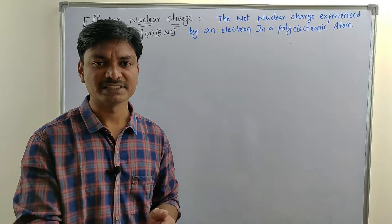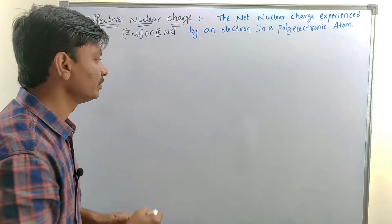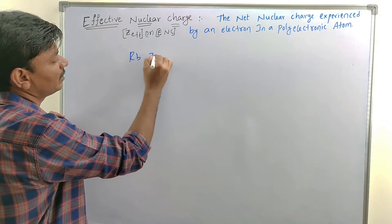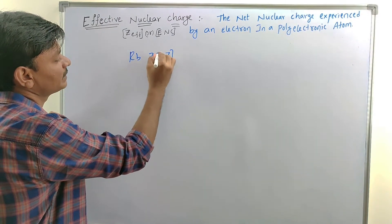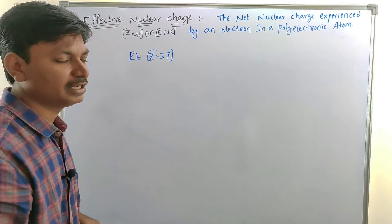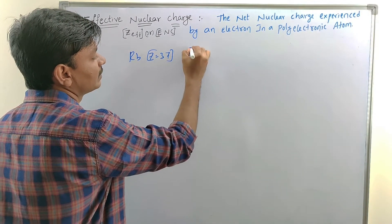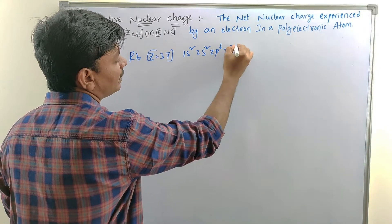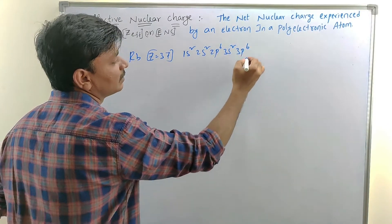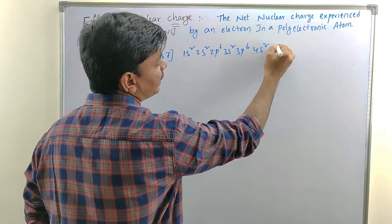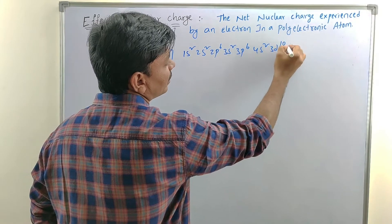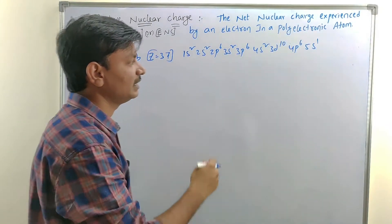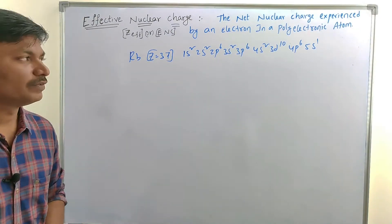Let me explain what it means with one example. Here it is rubidium. Its atomic number is 37 and its electronic configuration is 1s2, 2s2, 2p6, 3s2, 3p6, 4s2, 3d10, and 4p6, 5s1. This is the electronic configuration of rubidium.